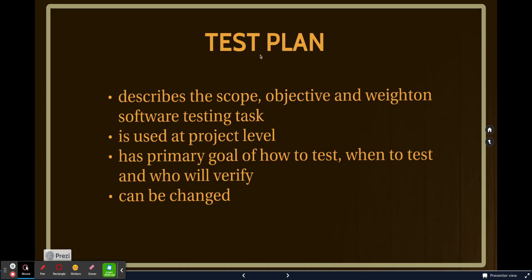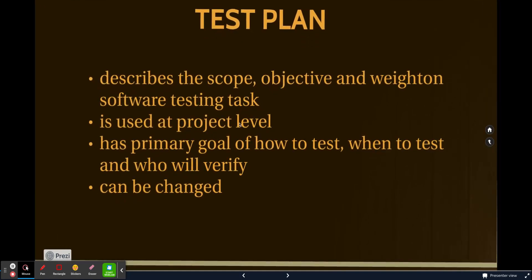So first one is test plan. Test plan basically describes the scope, objective, and weight on software testing task. That means that test plan is basically concerned with the activities relating at the project level. It has a primary goal of how to test, when to test, and who will verify the functionalities. And it can be changed.